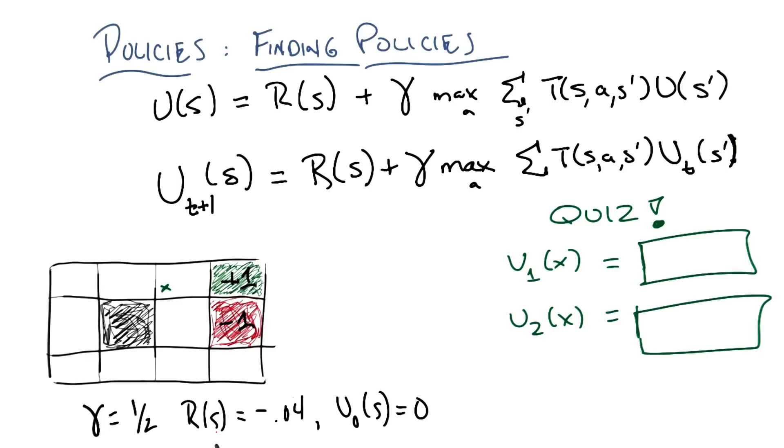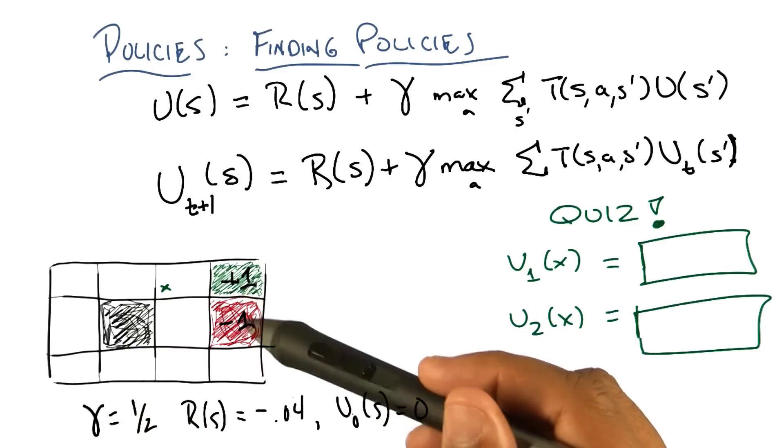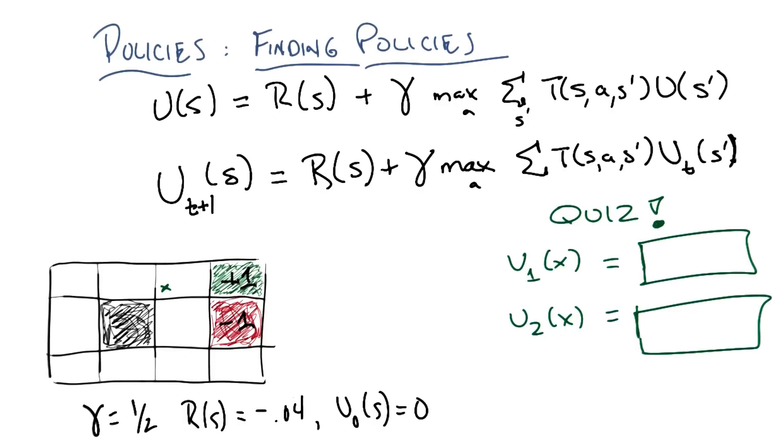The rewards, just to remind you, for all of the states except for the two goal or absorbing states is going to be minus 0.04. And my initial arbitrary utilities for all of the states is going to be 0 except in the two absorbing states where I already know the utilities are 1 and minus 1 respectively, okay?